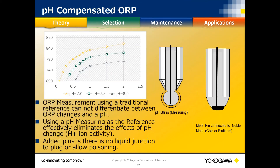Since the ORP electrode is not ion-selective like pH glass — it measures anything in the process — some applications will see millivolt changes because the process pH is also changing at the same time. We need to make sure we compensate for those in applications where this occurs, to correctly interpret what we're seeing.